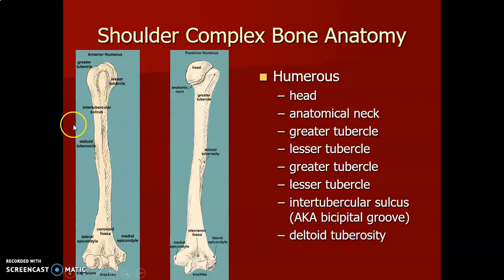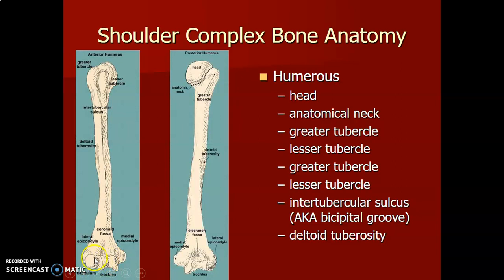This is the coronoid fossa. The trochlea articulates with the trochlear notch of the ulna, and the capitulum articulates with the radial head. That's the lateral epicondyle. The medial epicondyle is more prominent than the lateral epicondyle. The deltoid tuberosity is for the deltoid muscle, and there is the olecranon fossa posteriorly. Those are the parts of the humerus.